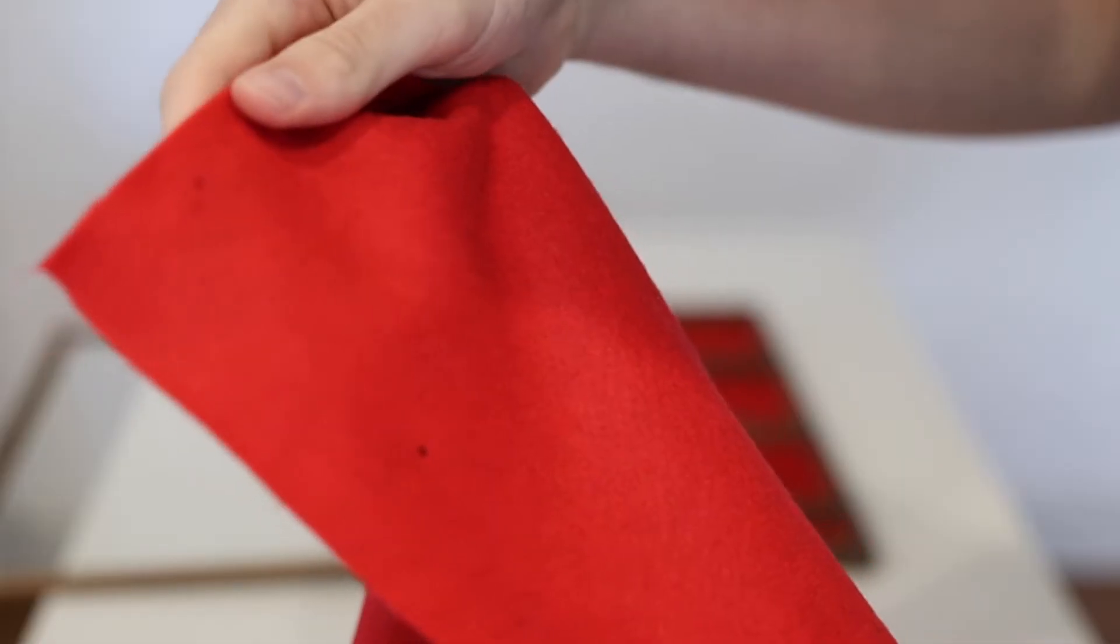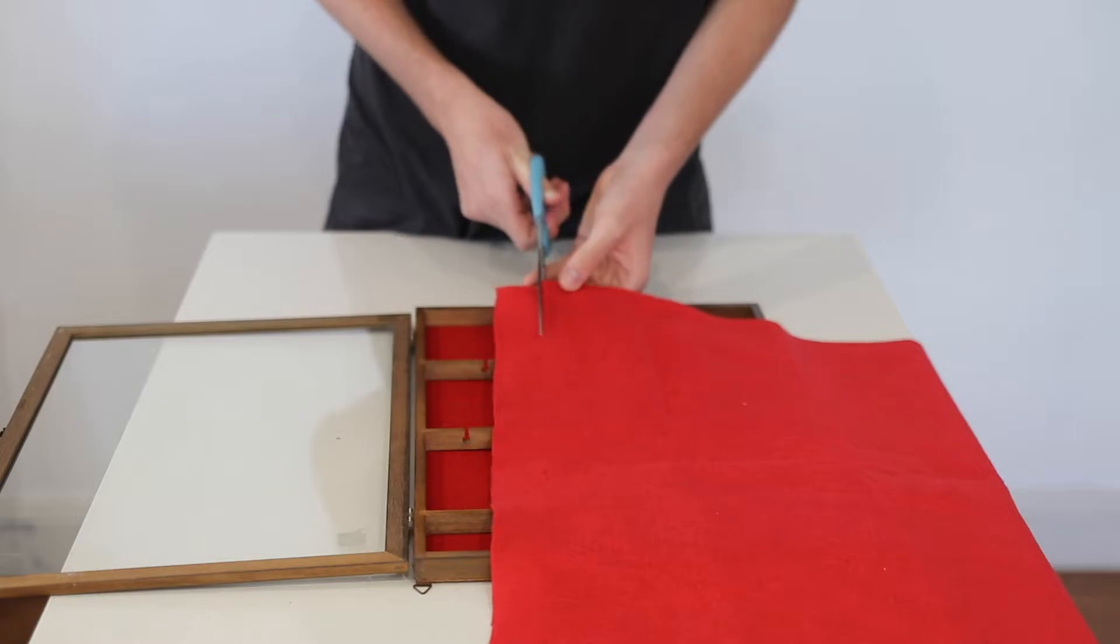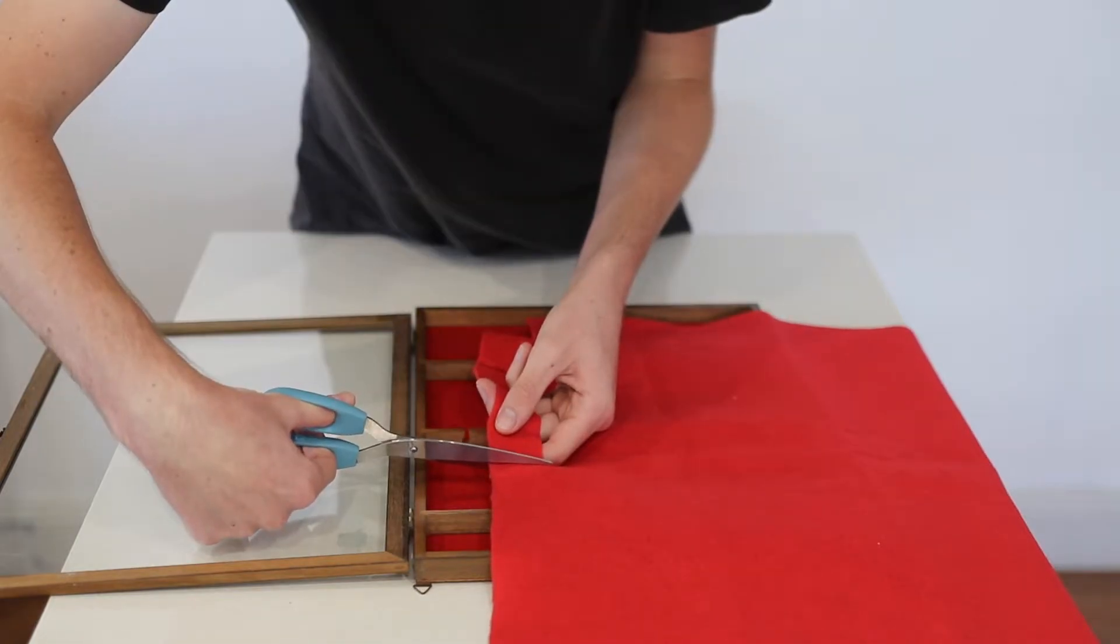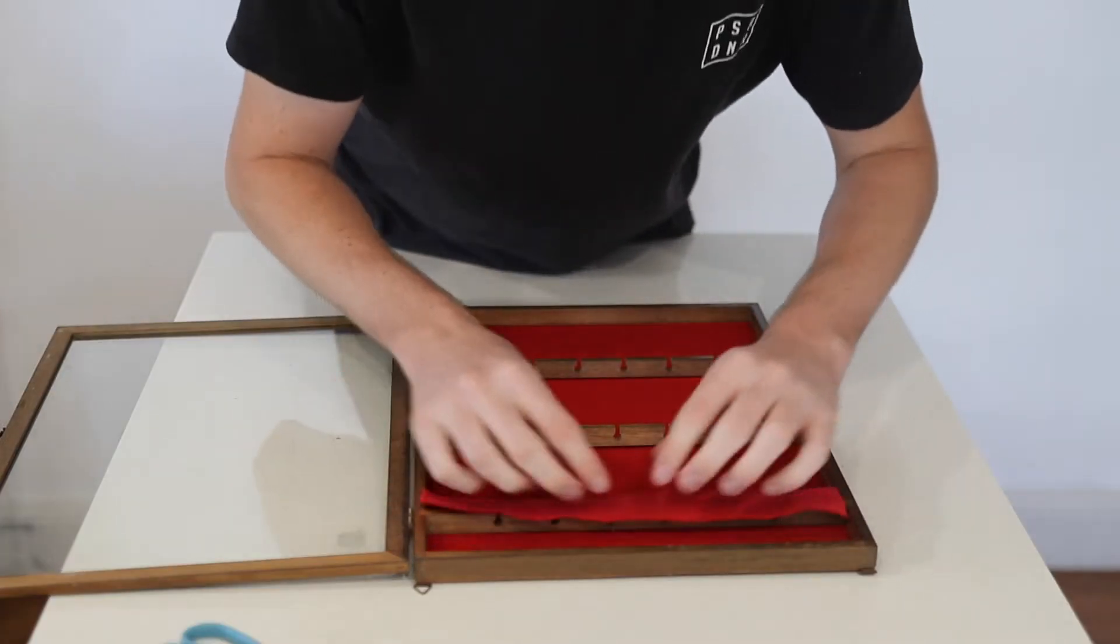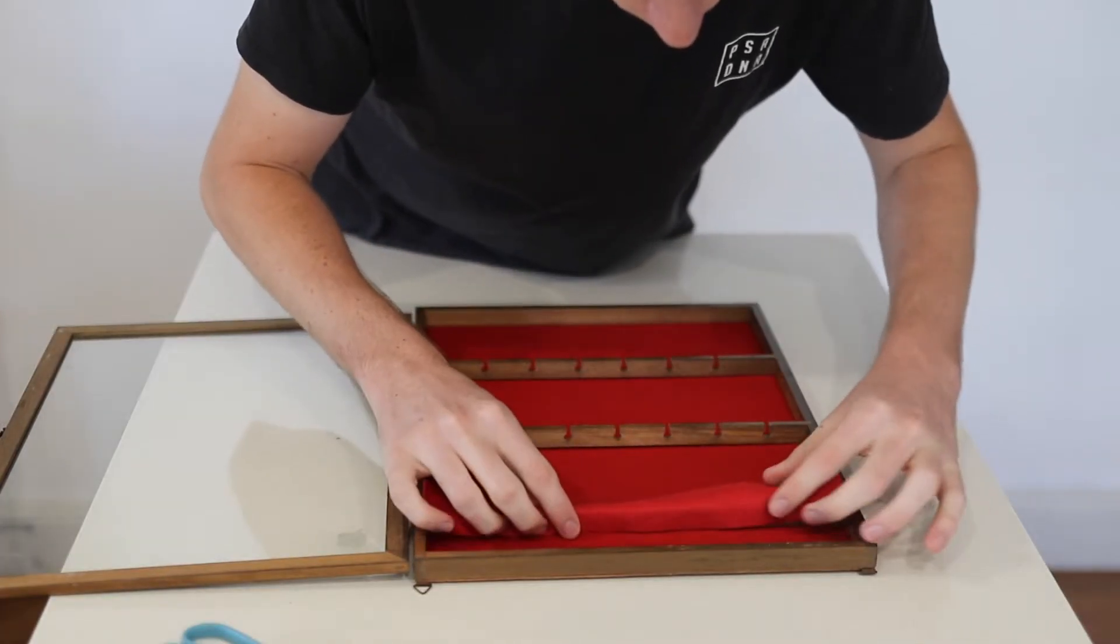As you can see there I put a few dots down to guide the scissors, and then it's time to cut it out. Now that that's cut I'll just check that it fits in place and get out the hot glue gun.